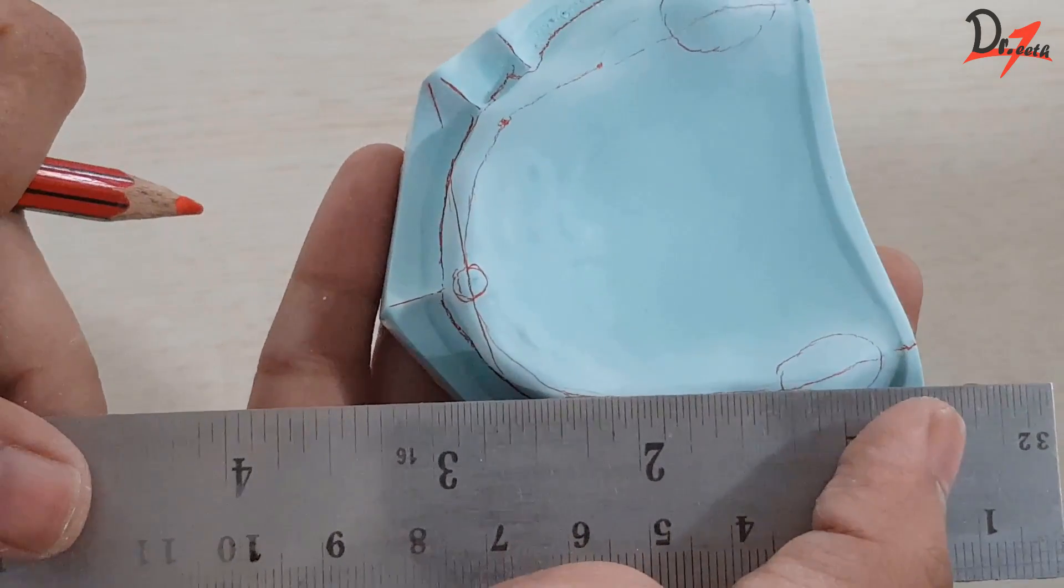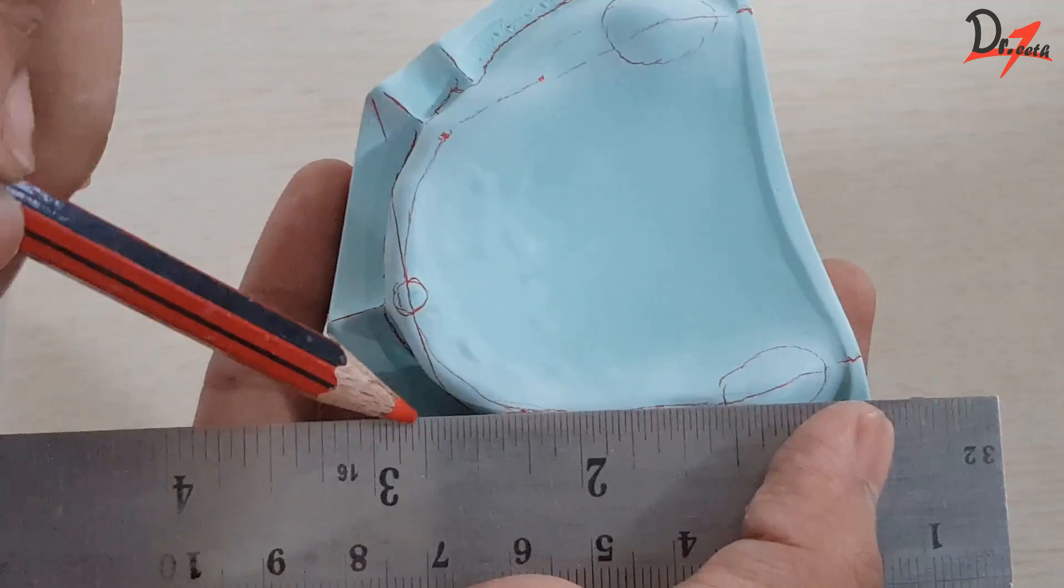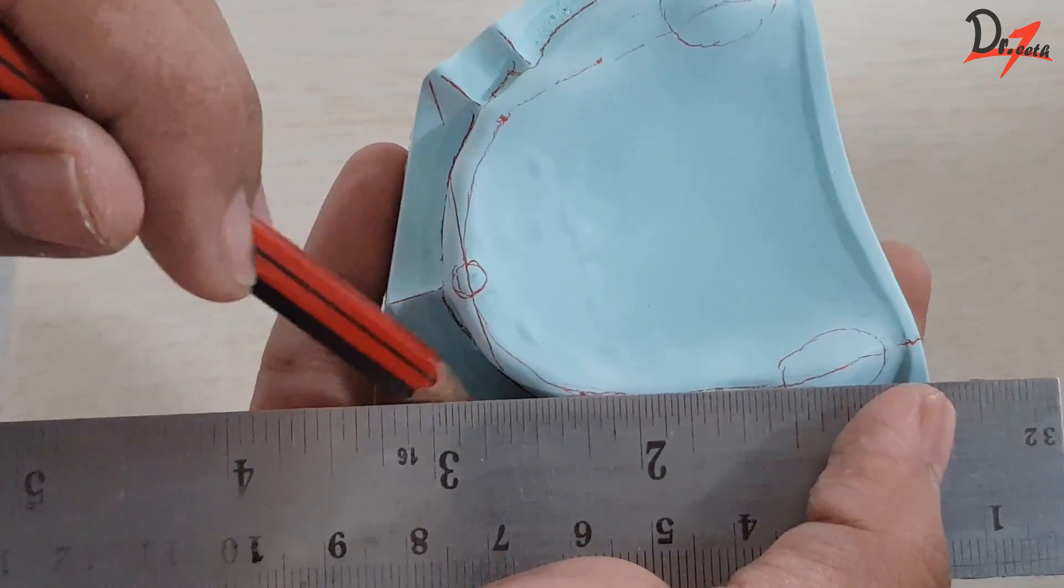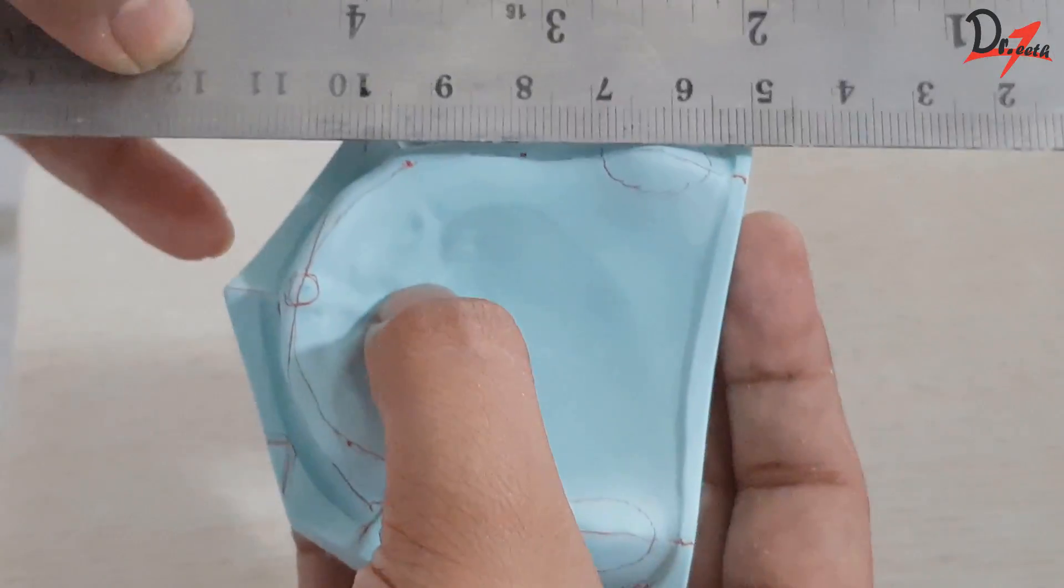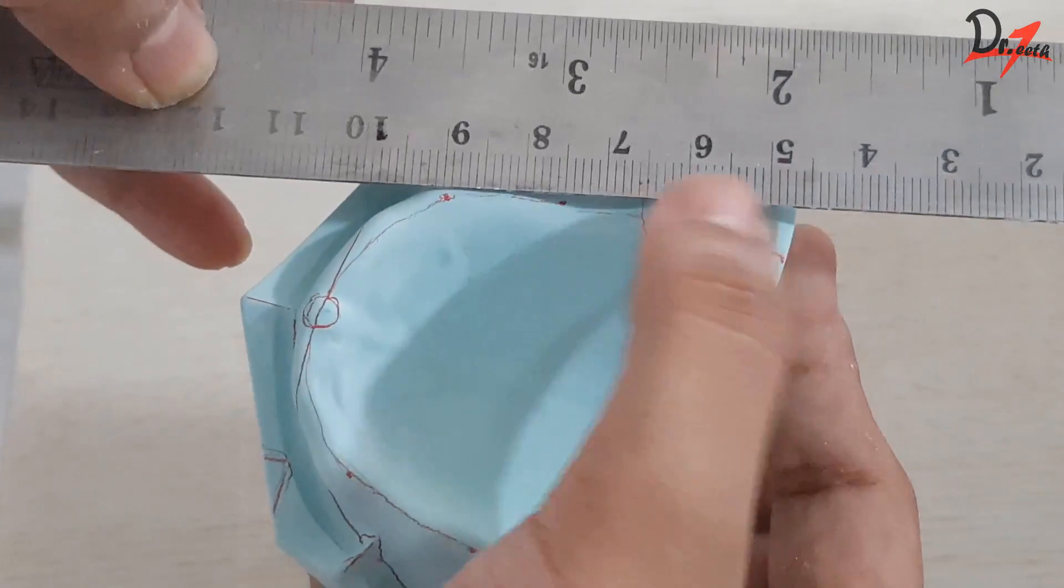Now what we have to do, we have to extend this line on the anterior surface of the cast. And we have already extended that line on the posterior surface of the cast.